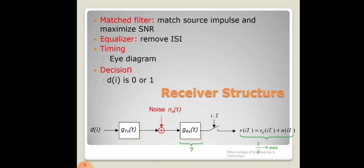In the block diagram of the receiver structure, the transmitted signal d(i) is passed through the transmit filter. Noise is added and the signal is received at the receiver side, where g_rx(t) is the receiver-side filter. When transmit and receiver-side filters act as matched pairs, we can eliminate the channel effect and avoid ISI.